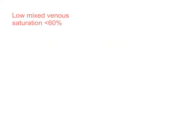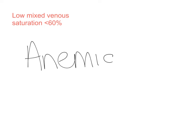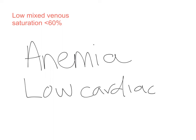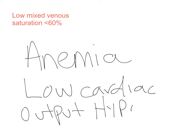A low mixed venous saturation is defined as a value less than 60%. This may be due to anemia, for which you would give the patient blood; low cardiac output, which you could augment by giving volume or pressors; or hypoxemia, which you can address by increasing the patient's FiO2.